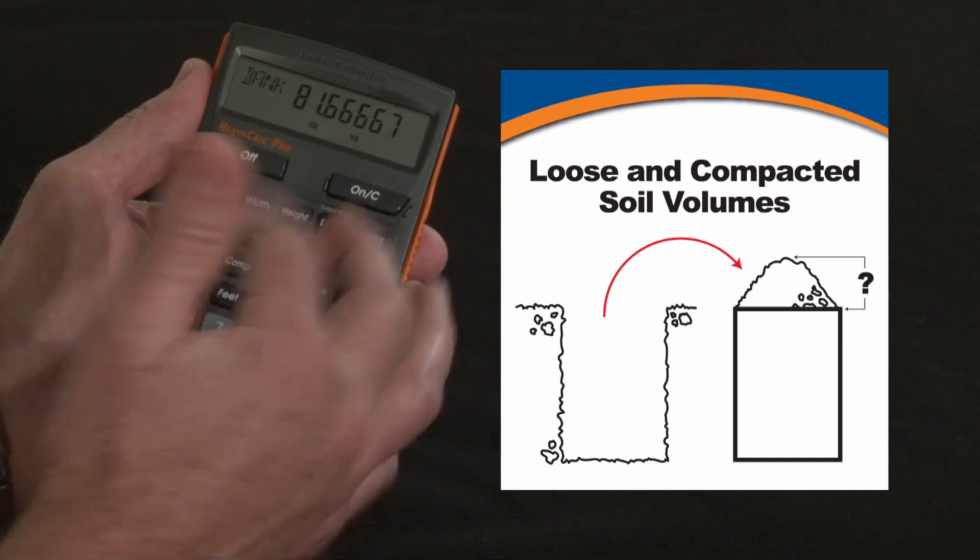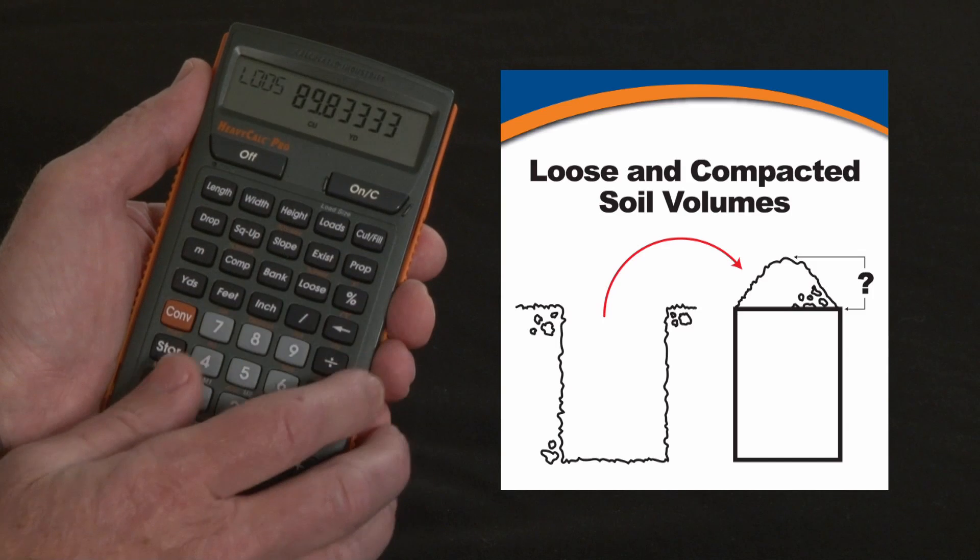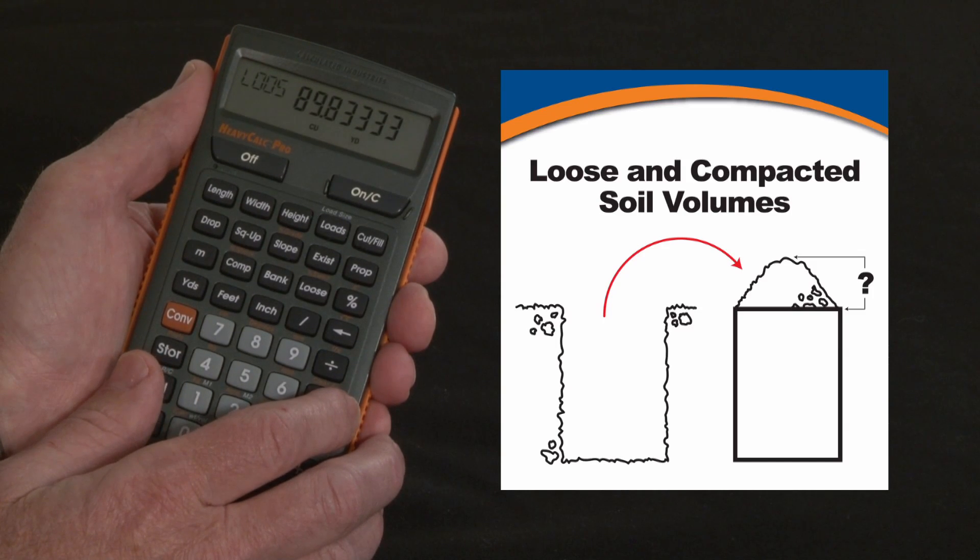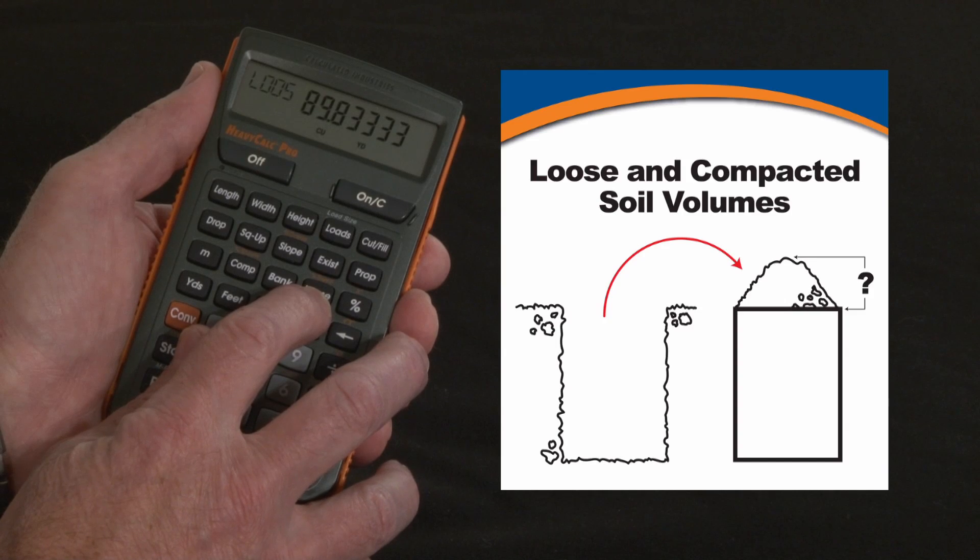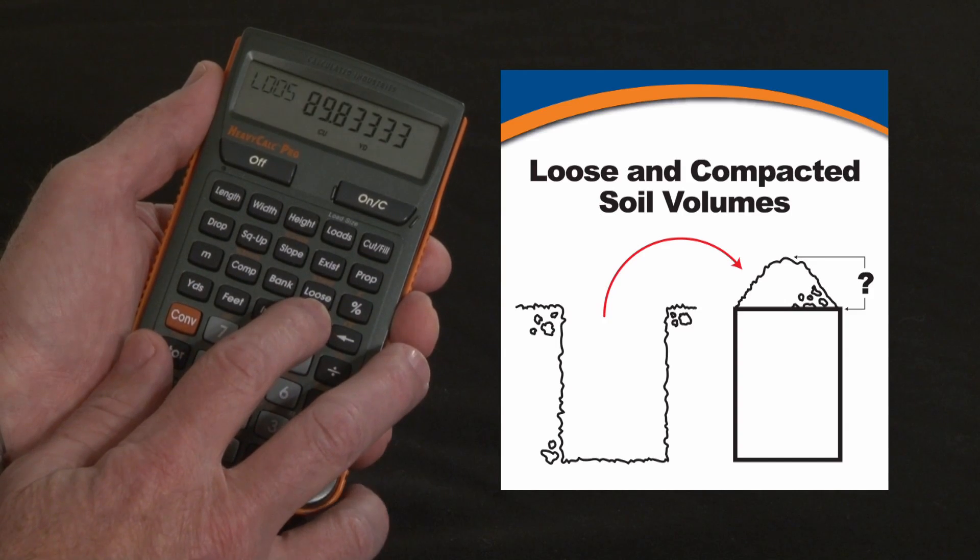Now if I'm excavating that, I'm going to press my loose key, and that's going to grow to 89.8 cubic yards based on our default swell factor of 10%. You can change that number to something else if you have a different soil composition.